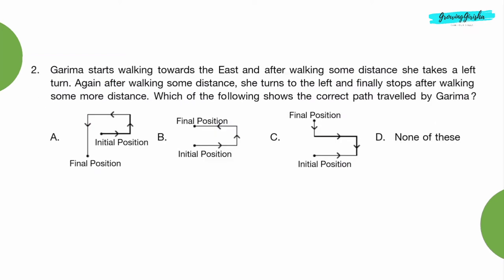Question 2: Garima starts walking towards the east and after walking some distance, she takes a left turn. Again after walking some distance, she turns to the left and finally stops after walking some more distance. Which of the following shows the correct path travelled by Garima? Option B.